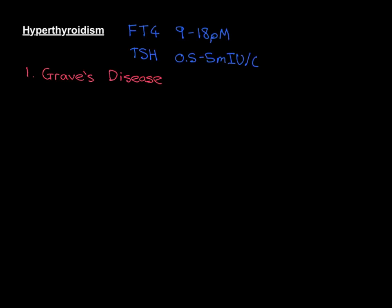Some autoimmune diseases are incredibly rare. Hashimoto's thyroiditis and Graves' disease are reasonably common. Hashimoto's is much more common than Graves', but Graves' is far from being a rare disease.